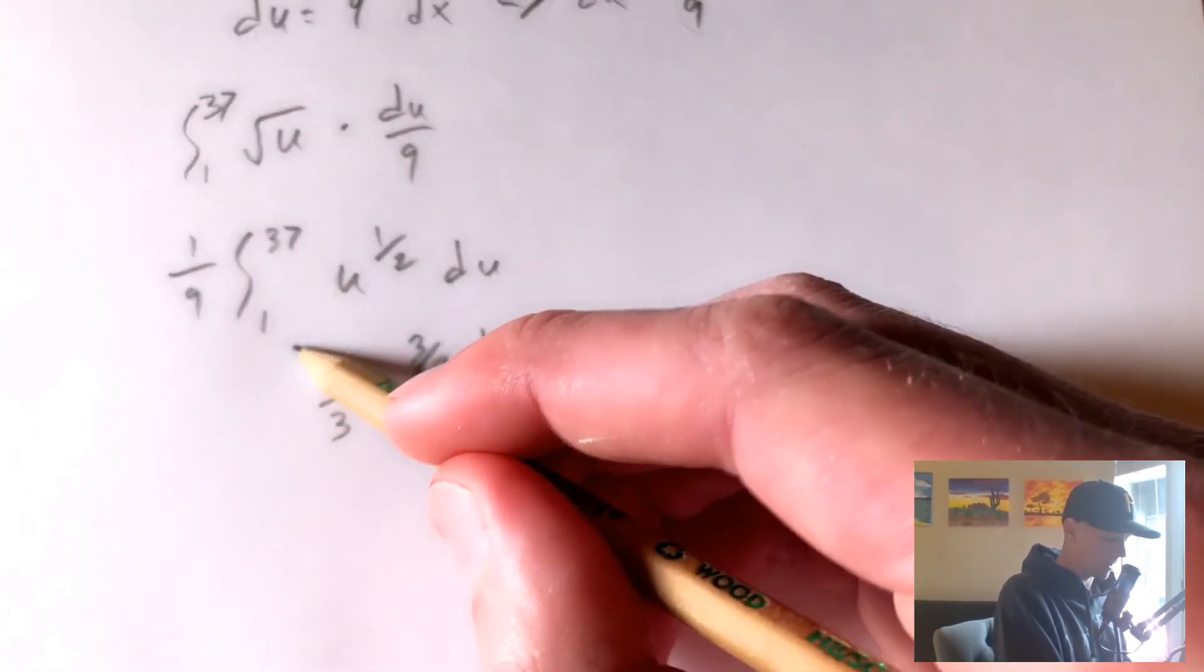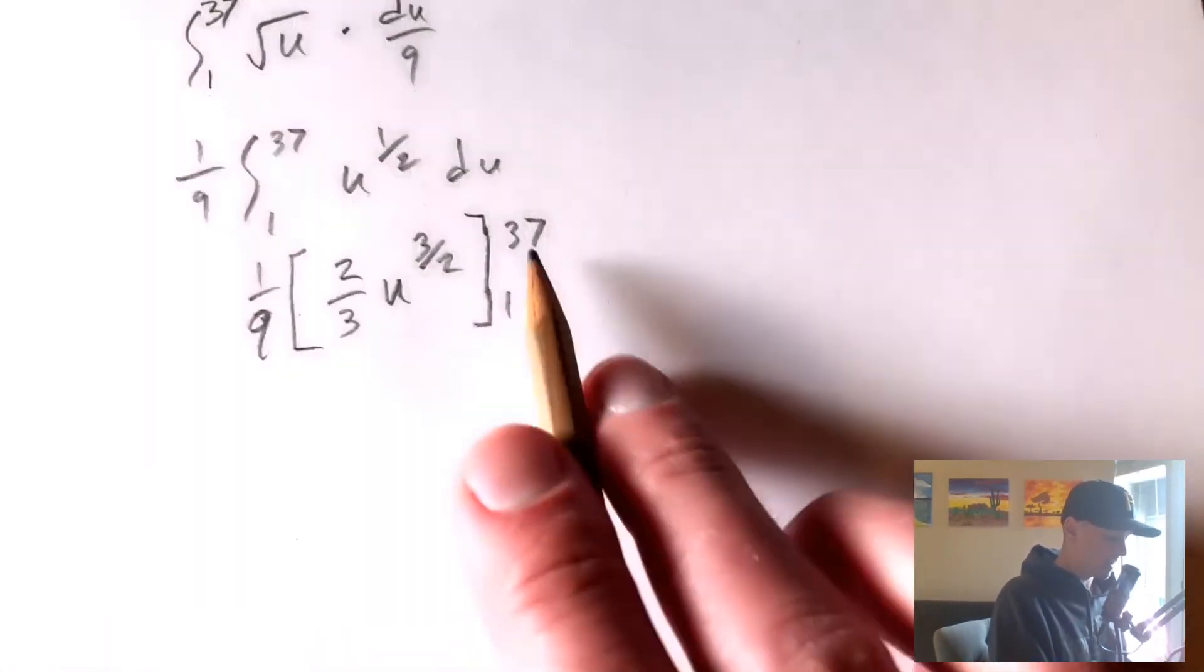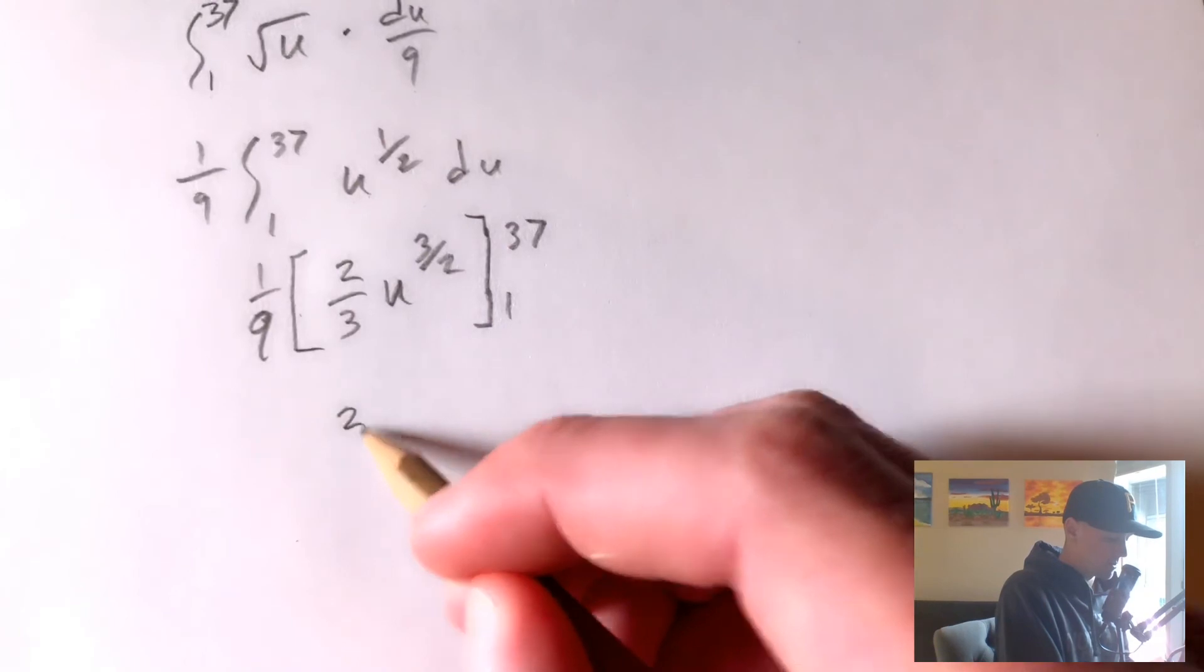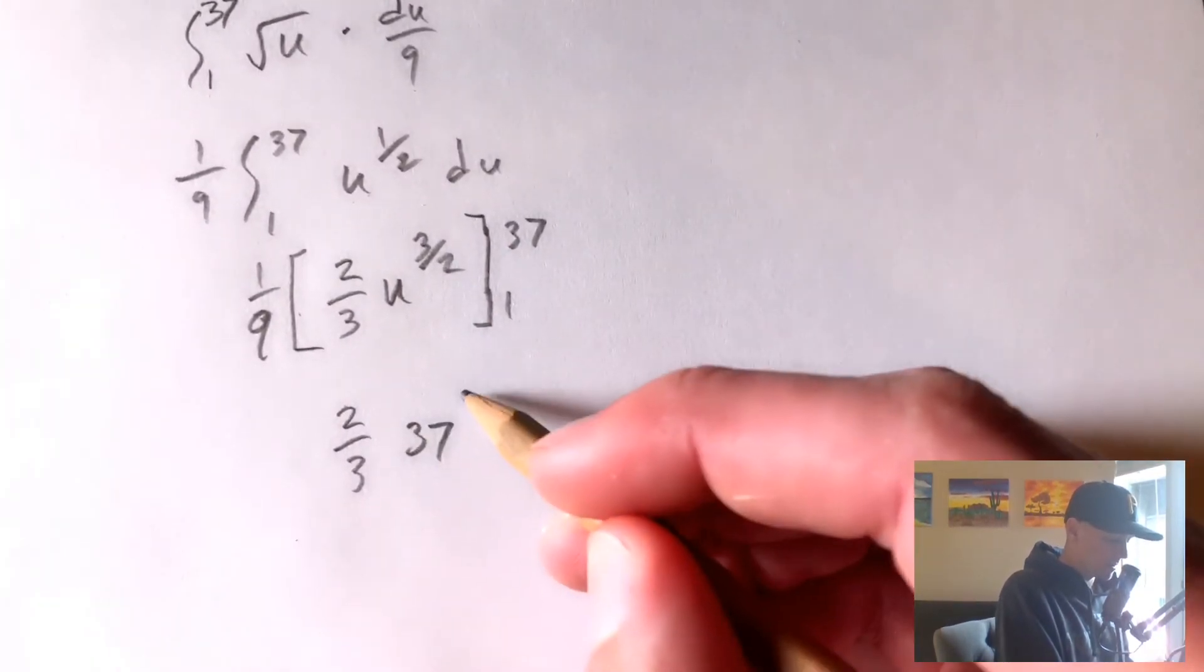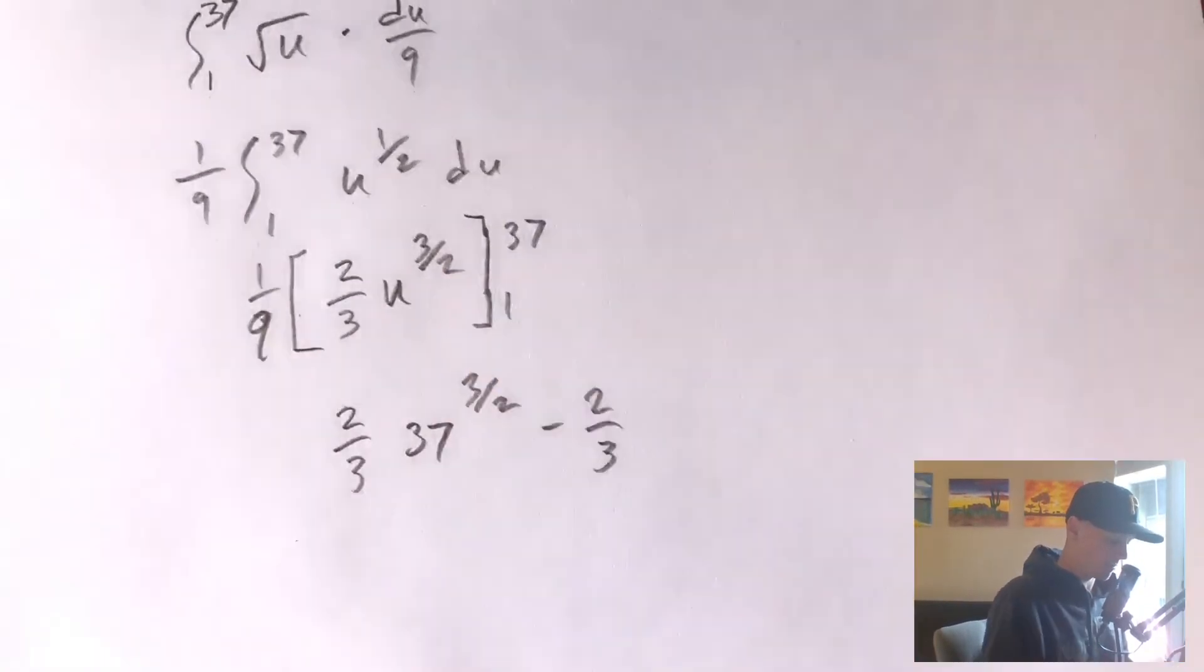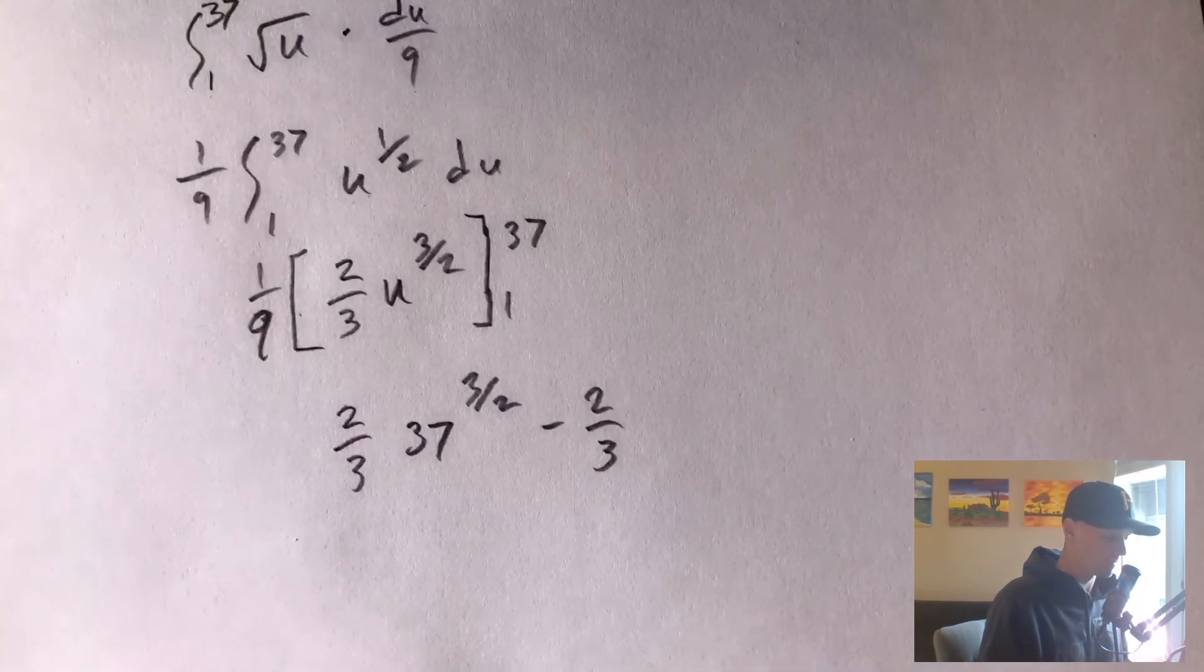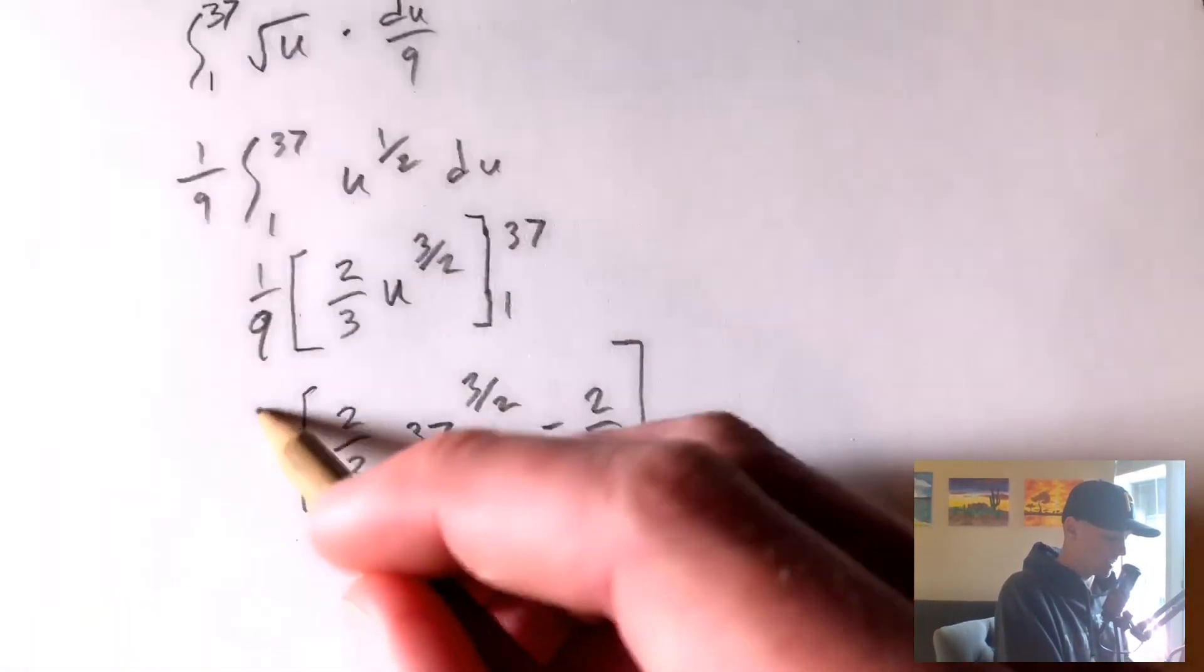And then don't forget, we're going to also have to multiply it by 1 9th at the end. So plugging in these bounds, we're going to get 2 thirds times 37 to the 3 halves minus 2 thirds times 1 to the 3 halves, which is just 1. And then we're going to have all that times 1 9th.